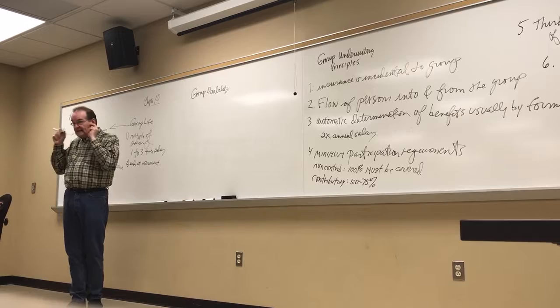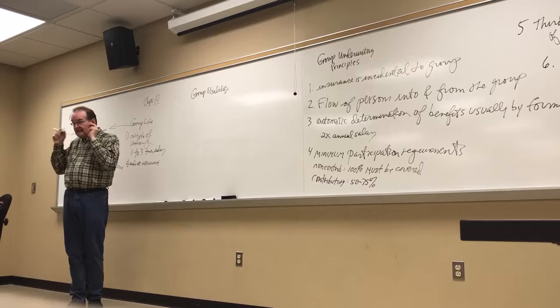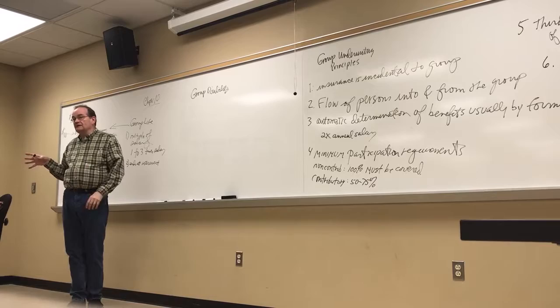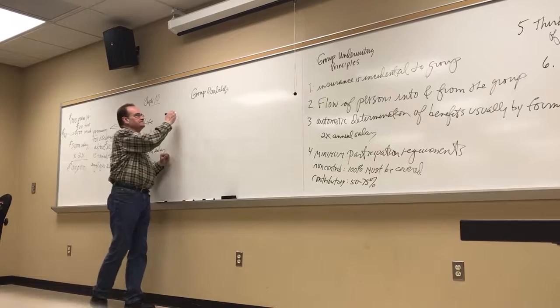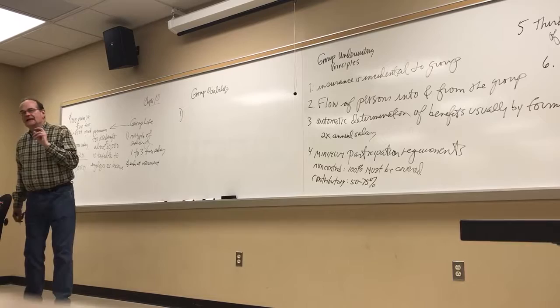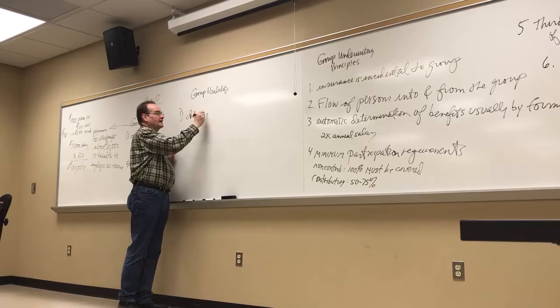Group life is covering the peril of death. Group disability is covering the peril of you're not able to work, right? You're disabled because of something that has happened to you. It doesn't have to be work-related. It can be an auto accident. It can be a skiing accident. It can be something like that. Group disability, right? Group disability insurance can be paid for by the individual. You can buy this yourself through, what's the one, Aflac. You can buy disability insurance through them.